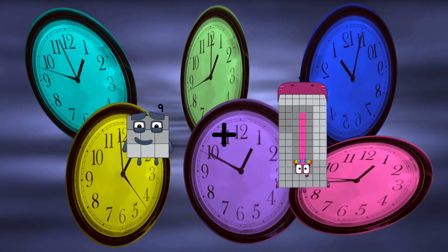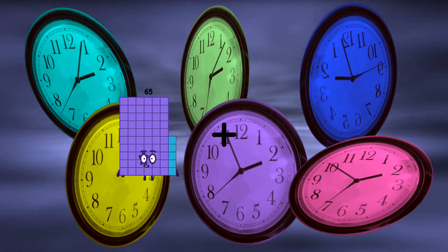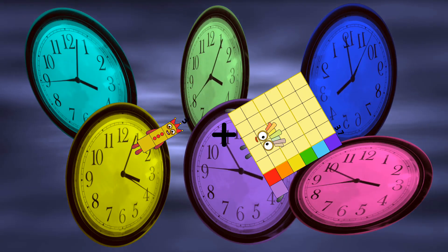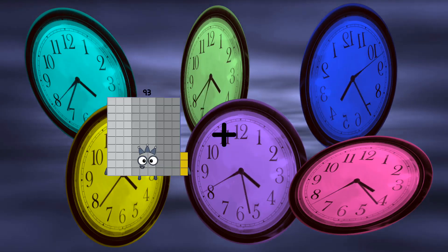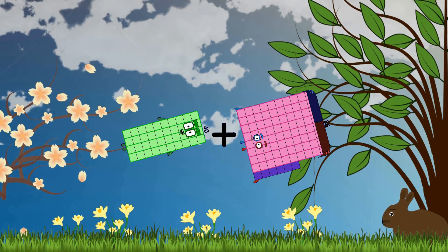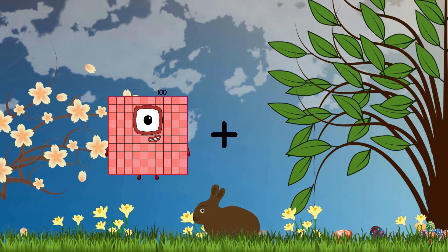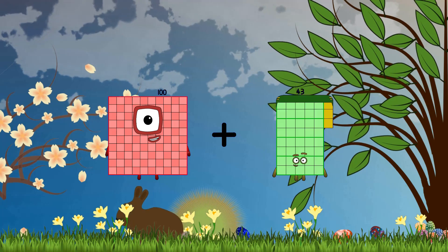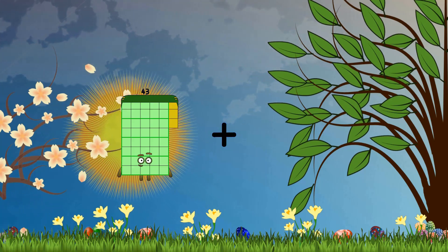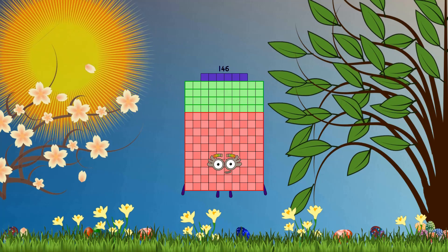9 plus 14 equals 23. 3 plus 37 equals 40. 40 plus 86 equals 126. 100 plus 43 equals 143. 43 plus 103 equals 146.